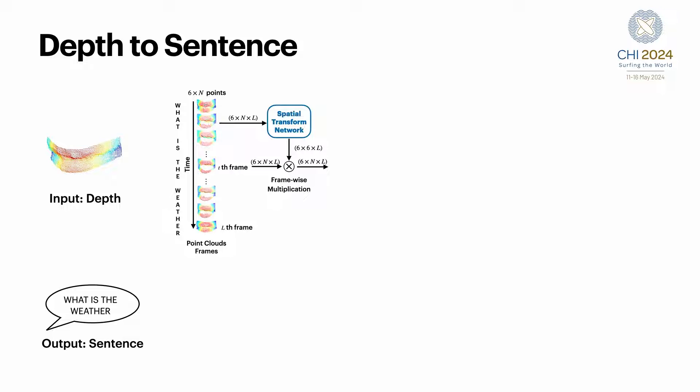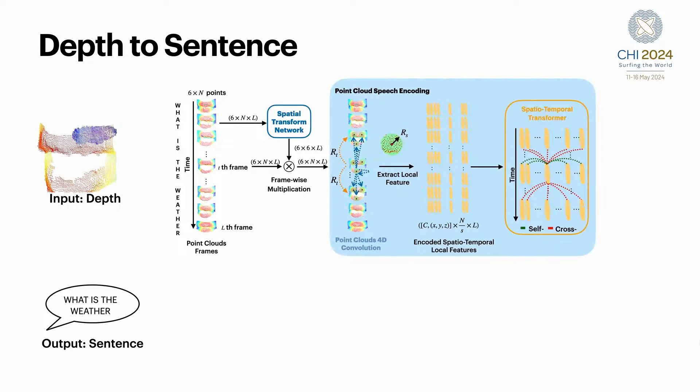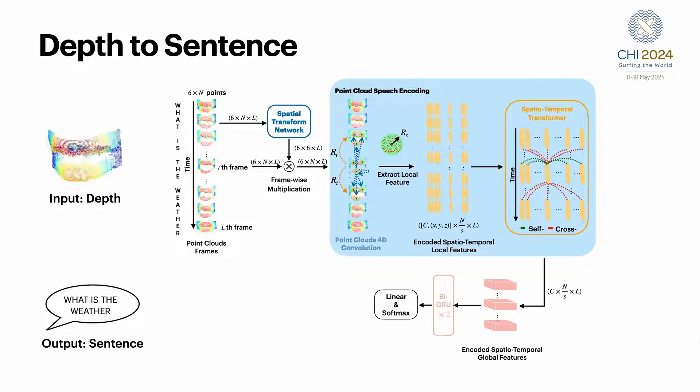Following this, to capture spatial and temporal information effectively, we employ a PointNet convolutional layer along with a transformer. These layers serve as feature extraction. The extracted features are then processed through two bidirectional GRU layers, decoding visual cues into corresponding text representations.